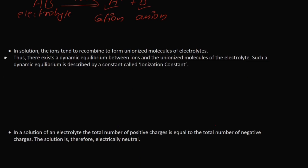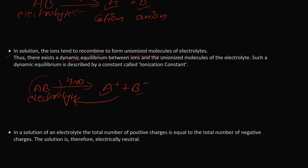The second postulate states that in solution the ions tend to recombine to form unionized molecules — it is a two-way reaction. Thus there exists a dynamic equilibrium between the ions and the unionized molecules of the electrolyte. So from the same example: AB breaks to give A⁺ and B⁻, and these ions recombine to reform AB. At a particular condition there will be an equilibrium between the unionized molecule AB and the ions — this is called dynamic equilibrium.